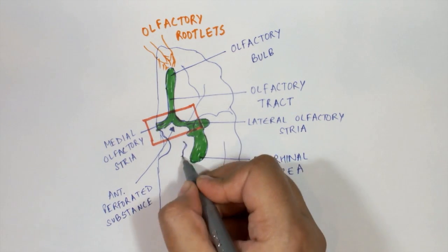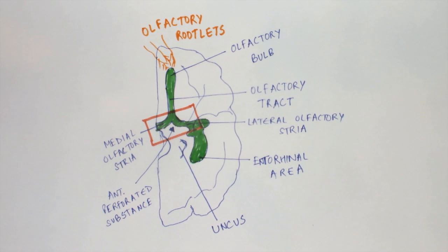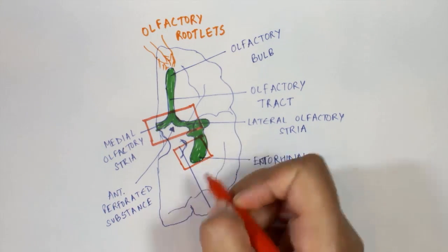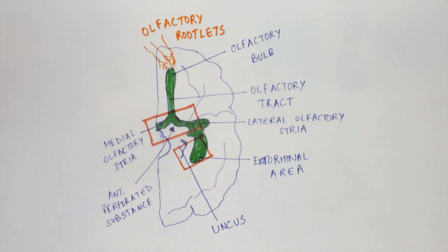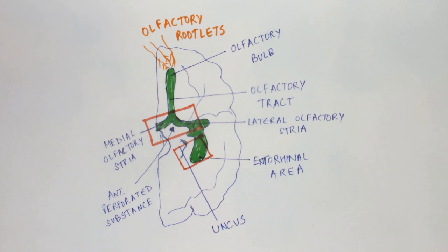These neurons continue posteriorly and enter into an area known as the entorhinal area. The area just medial to it is the uncus, and these two areas form the secondary olfactory cortex. The secondary olfactory cortex is associated with functions like memory and emotions associated with the sense of smell.